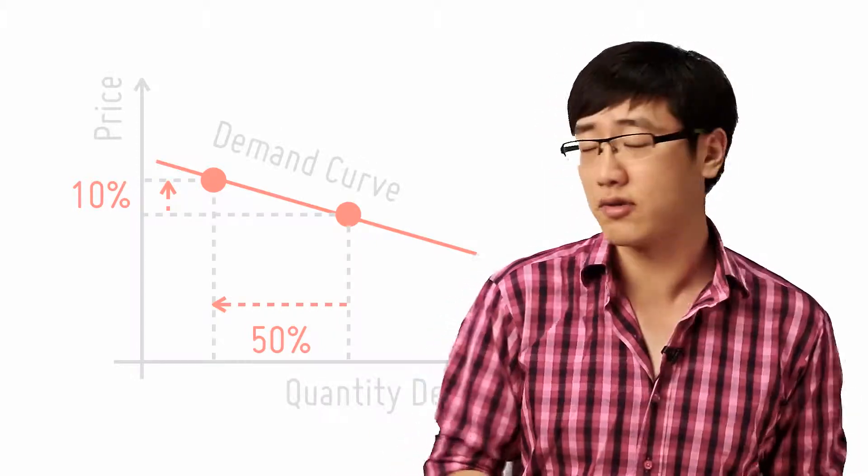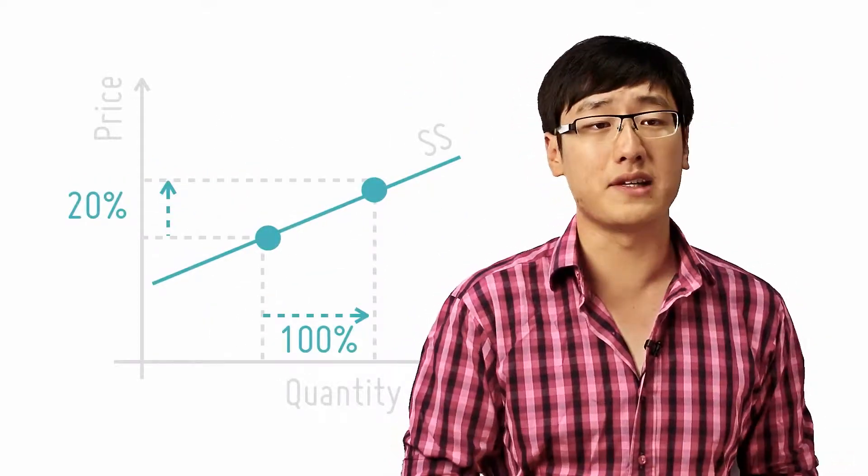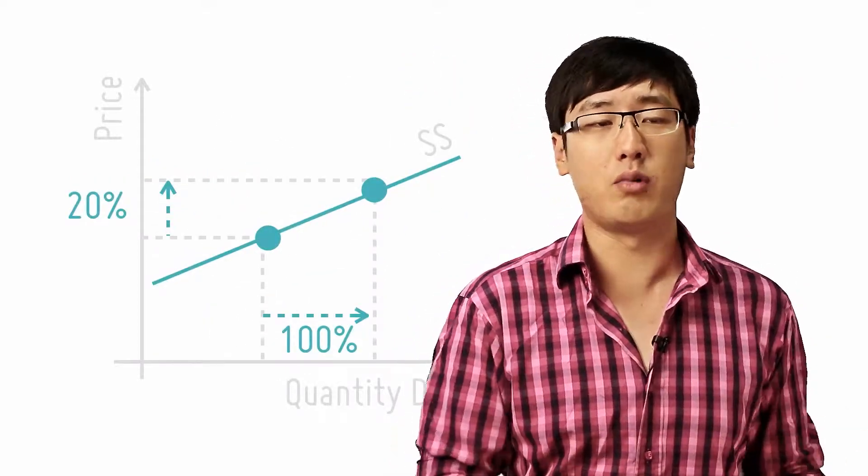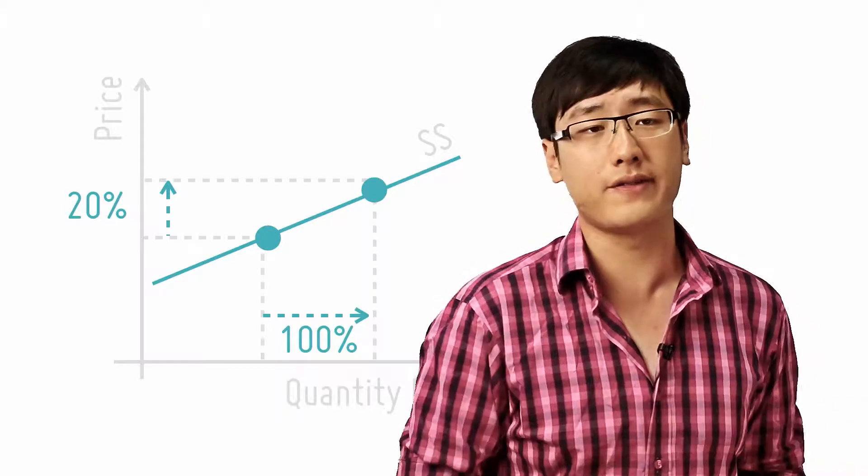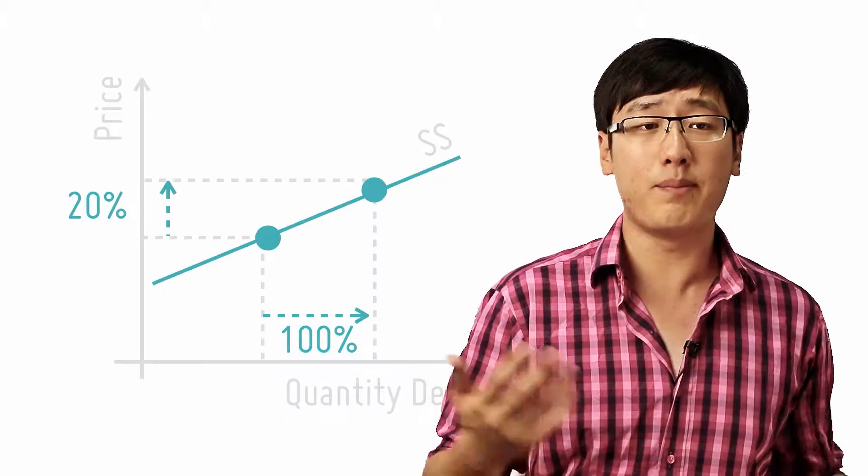However, if you want a positive sign, you have to look at something like the supply curve. This time when the price increases by 20%, with a PES of 5, the quantity increases by 100%. So the elasticity is positive 5.